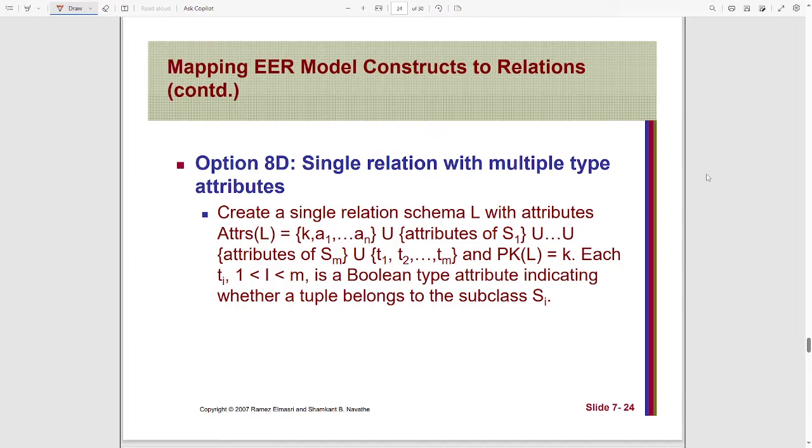Let's see the last approach, which is more like the previous method. In 8D, it says single relation with multiple type attributes. So here the relation will be one which will contain all the attributes of the subclass and the superclass. But as the name says, here the type attribute will be multiple.